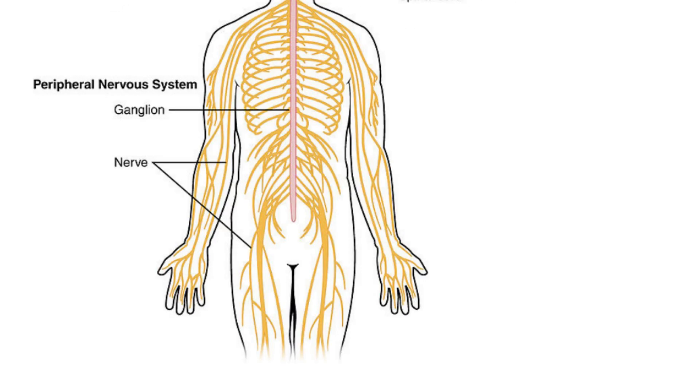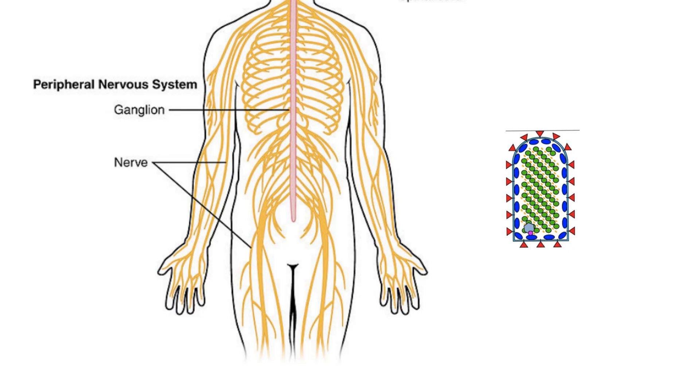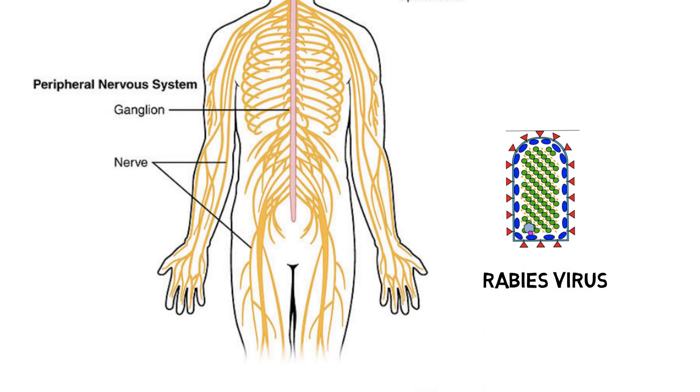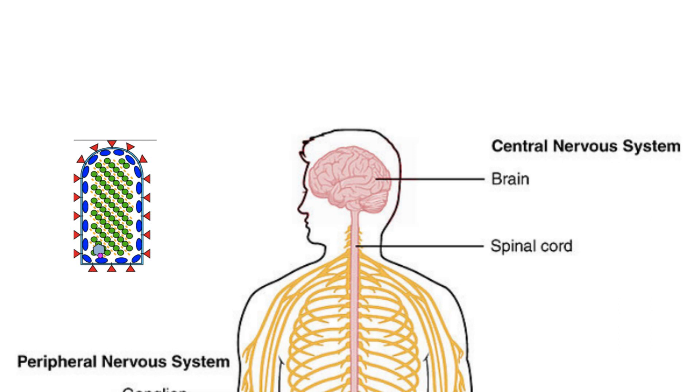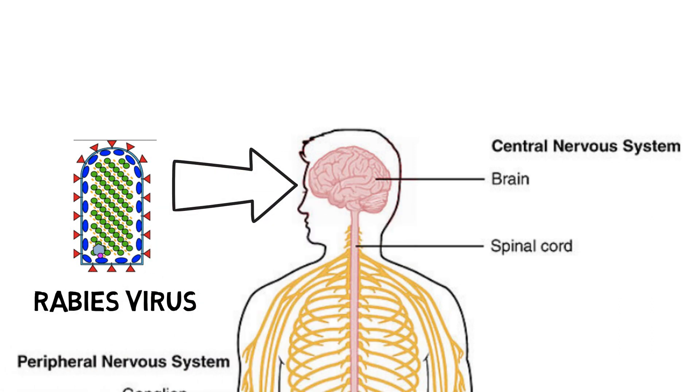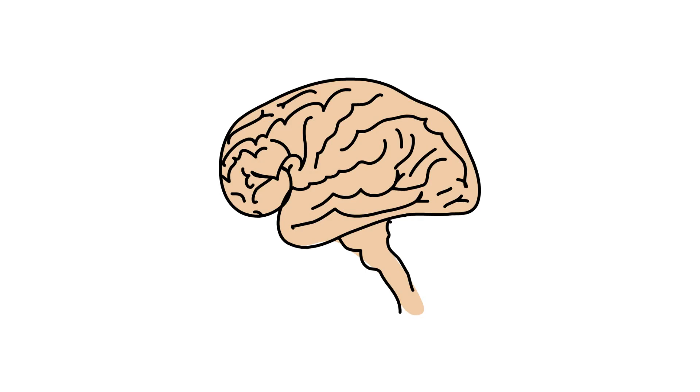The replicating rabies virus first invades the peripheral nervous system, where it travels through the neurons until it reaches the central nervous system. After reaching the central nervous system, the virus travels up the spinal cord and into the brain, where it rapidly multiplies.